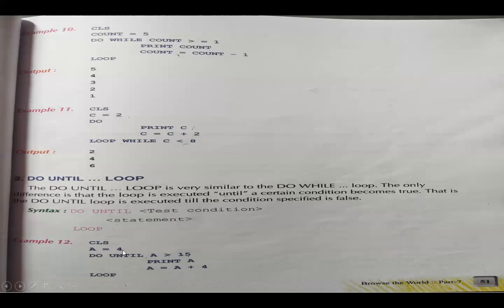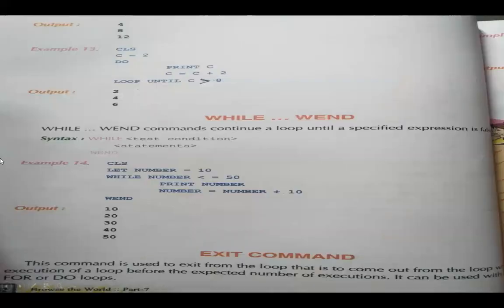Here a equals 4, so we start from 4. Until 4 is greater than 15: is 4 greater than 15? No — so it prints 4. Then 4 plus 4 is 8; is 8 greater than 15? No — print 8. Then 8 plus 4 is 12; is 12 greater than 15? No — print 12. Then 12 plus 4 is 16; is 16 greater than 15? Yes — so no more printing. Output is 4, 8, and 12.